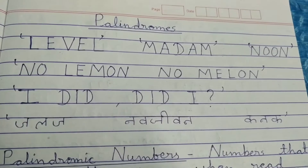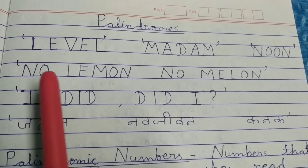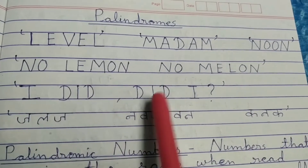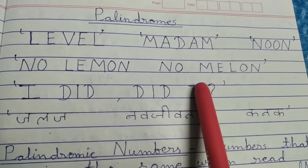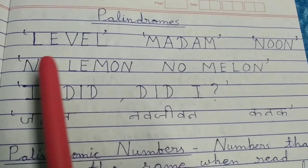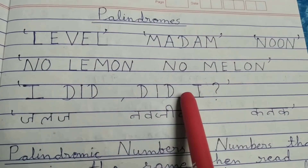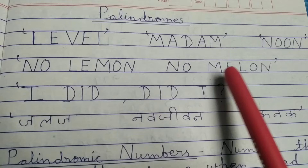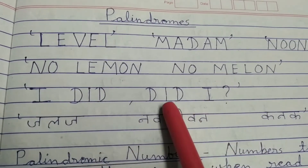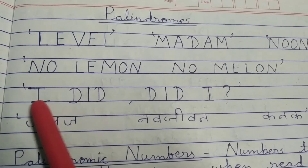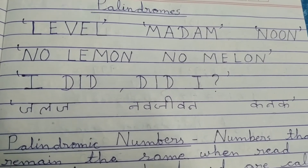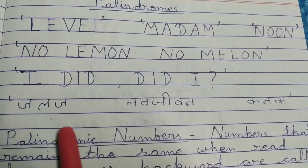There are palindromic sentences also. For example, 'No lemon no melon' and 'I did, did I.' If you ignore the punctuation marks and the spaces between the words, then these are also palindromic sentences.